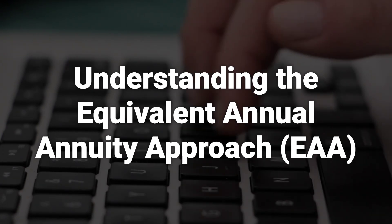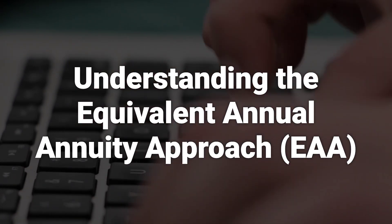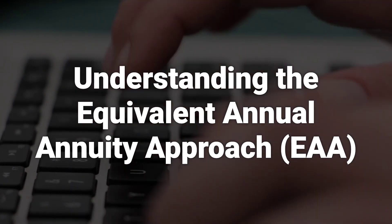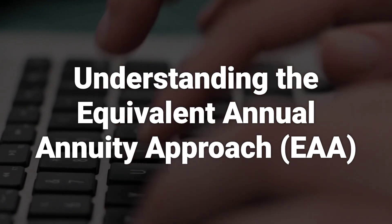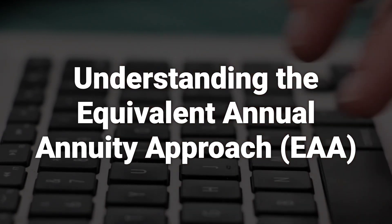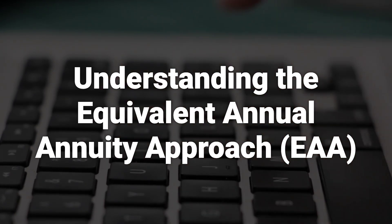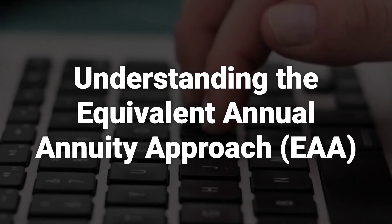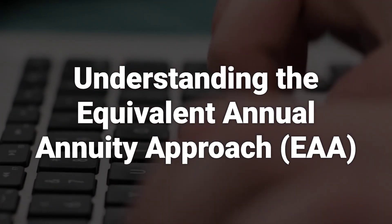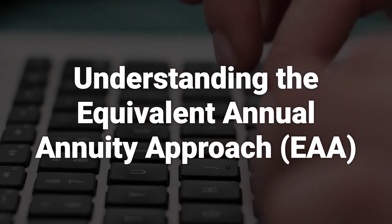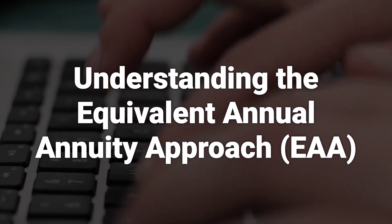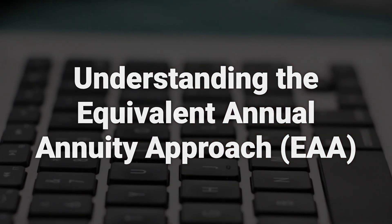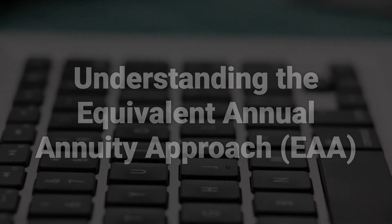The EAA approach uses a three-step process to compare projects. First, an analyst calculates each project's NPV over its lifetime. Then, they compute each project's EAA so that the present value of the annuities is exactly equal to the project's NPV. Lastly, the analyst compares each project's EAA and selects the one with the highest EAA.